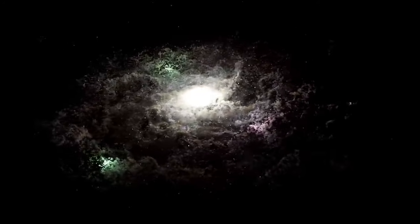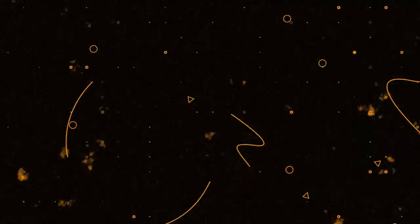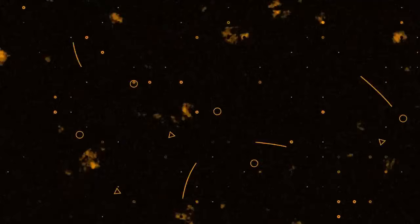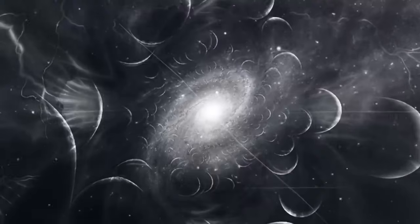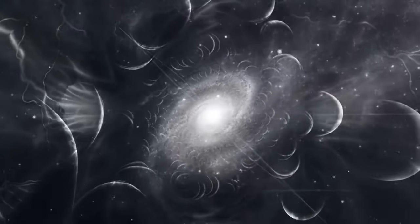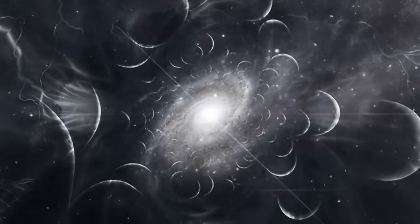The James Webb Telescope has also illuminated one of the universe's most elusive enigmas, dark matter. By observing gravitational lensing, where massive cosmic clusters bend light from objects behind them, Webb has helped create high-resolution maps of dark matter's distribution.